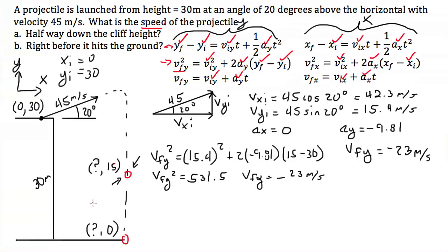Now we need the final velocity in the x direction. Looking at the x equations, we can't directly solve them without knowing either final x position or time. So we go back to the y equations to find time, then use that to solve the x equations for the final x velocity.